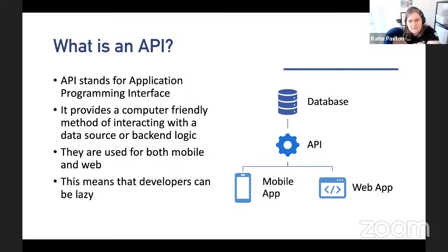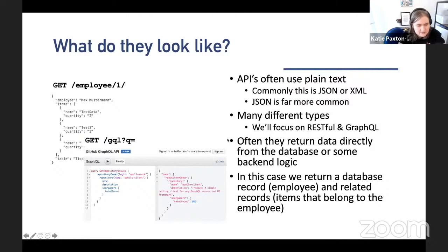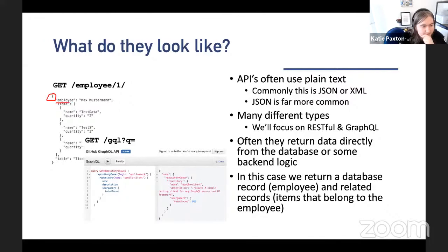These API responses look like random text files. They use something called JSON. JSON is a way of representing data in a computer-friendly way. What it looks like is we have these curly brackets — that is the telltale sign that it's JSON, the thing you should be looking for. We have a key, for example 'employee', and then we have the value, 'Max Musterman'. There are many different types of APIs, but today I'm going to be focusing on RESTful and GraphQL APIs.